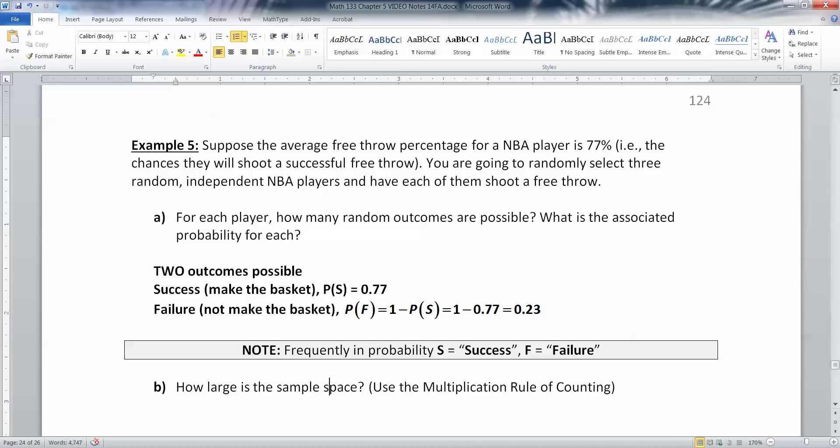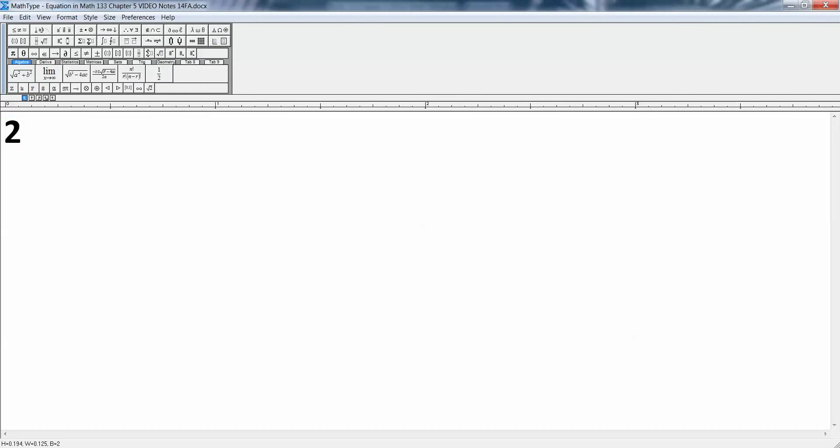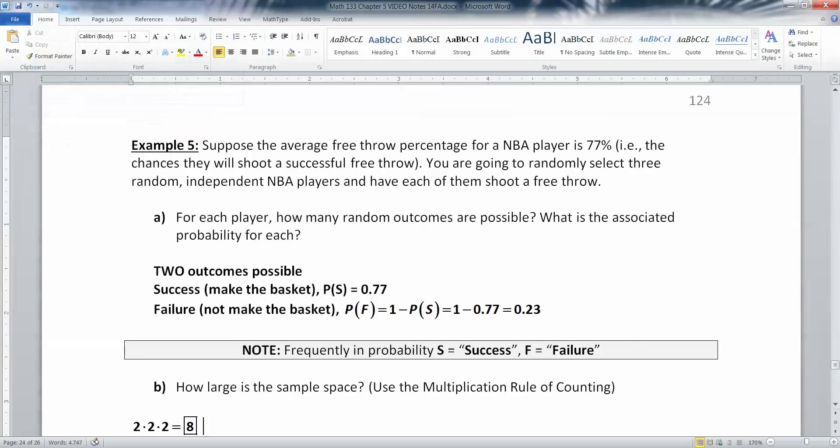All right, now how large is the sample space? Well, you've got three shooters going up, right? So they have two options for the first shooter, he could succeed or fail. Then you have two options for the next one, succeed or fail. Then two options for the third one. That would give you a grand total of eight. Eight possible outcomes for the sample space.